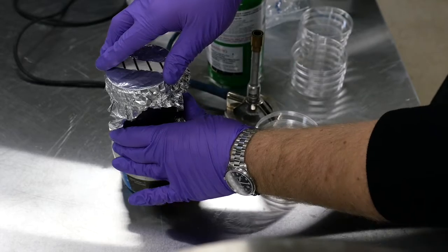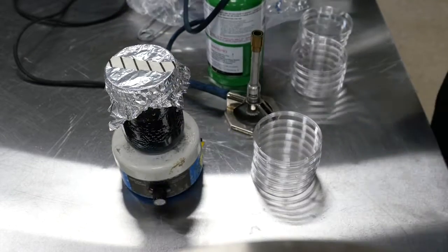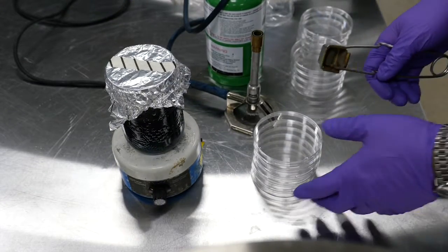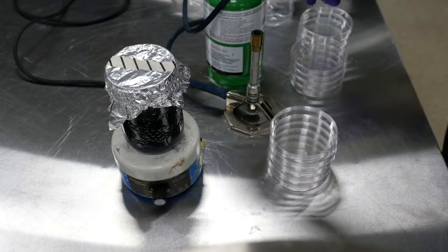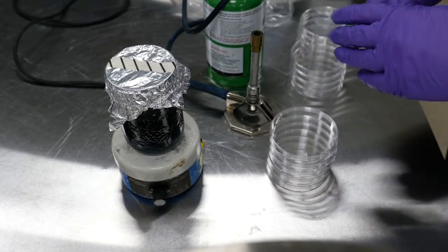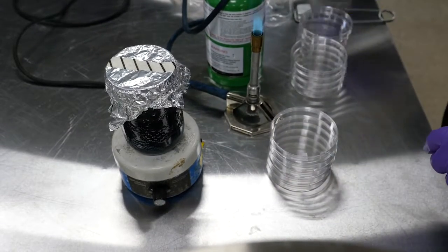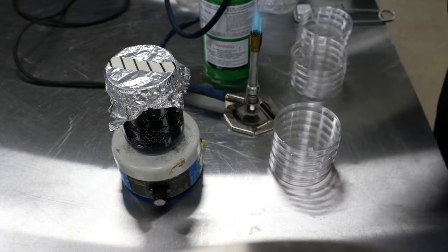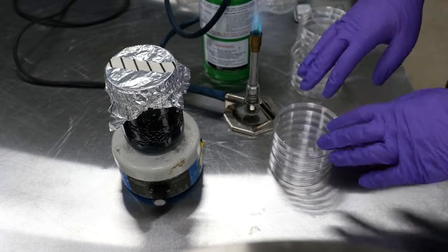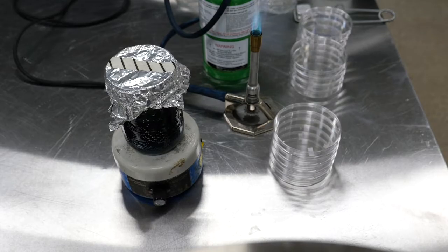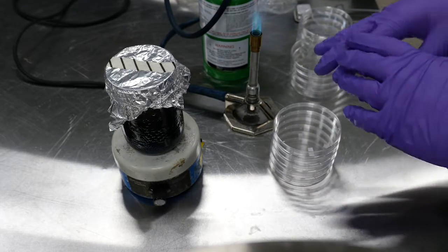And our agar is still nice and hot. We don't want it to get too cool because if it gets too cool, it will start to solidify. So next step is light up our Bunsen burner. That's going to help us to get a sanitary work area. You also need to make sure that your work area is draft free.